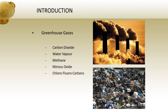Now in this slide, you can see the major greenhouse gases — this is a very important slide. You should know the different types: firstly carbon dioxide, then water vapor, third methane, fourth is nitrous oxide, and fifth is chlorofluorocarbons. You can see the diagrams — due to heat and these chimneys, all steam is coming out making the environment very hot. All these things are spoiling the environment.